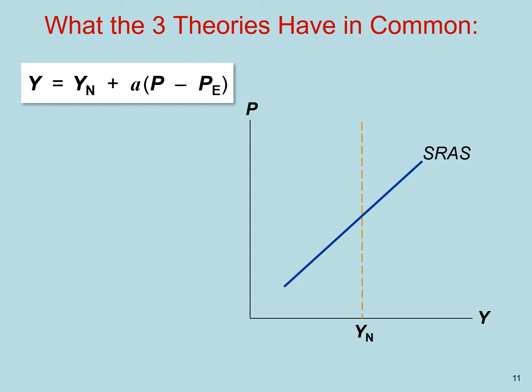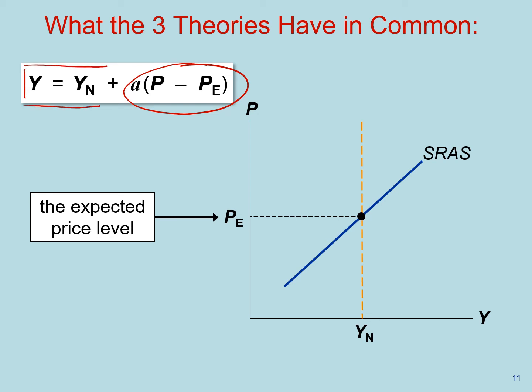Here, we have the natural level of output as reference. When we are at a level of prices that is equal to the expected price level, this difference right here on this equation is equal to zero. So unsurprisingly, we find that the natural level of output is equal to short run output, as you can see here on the graph.